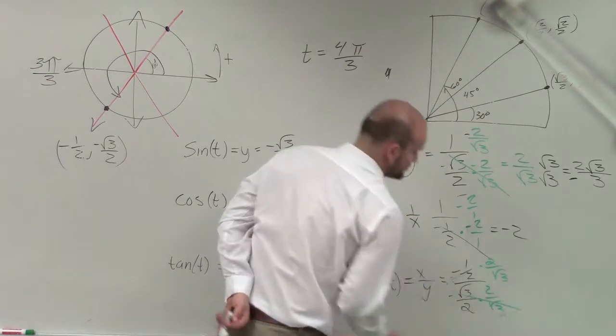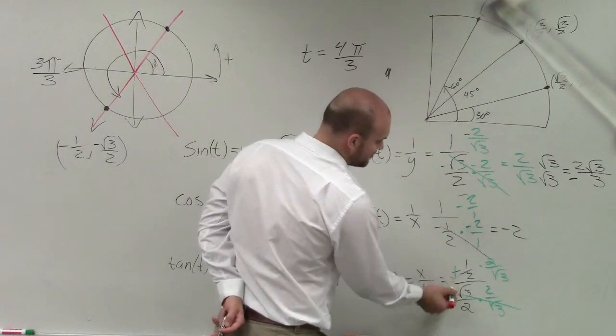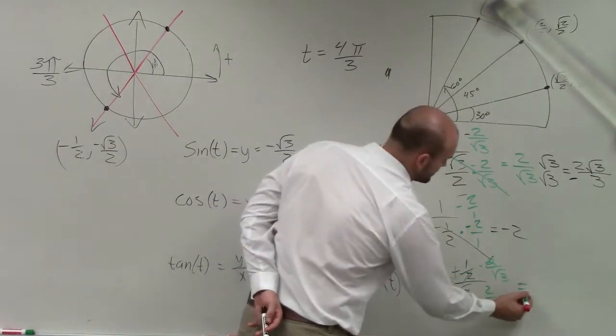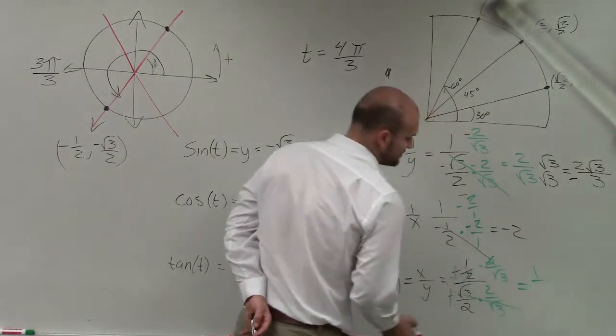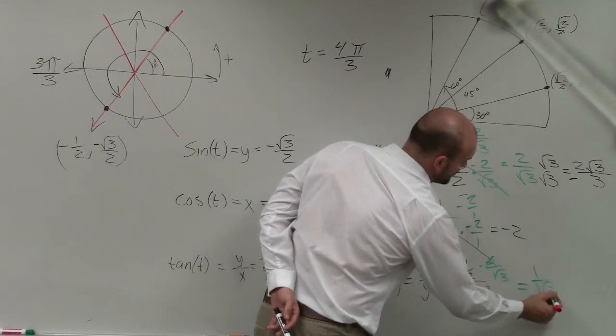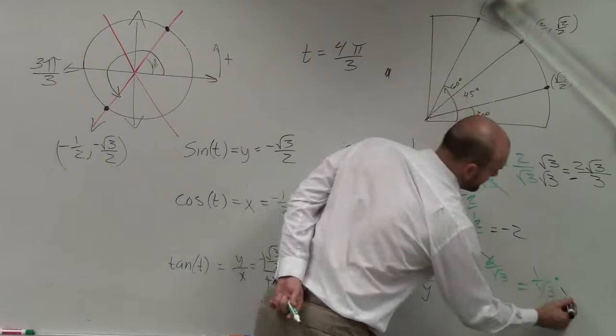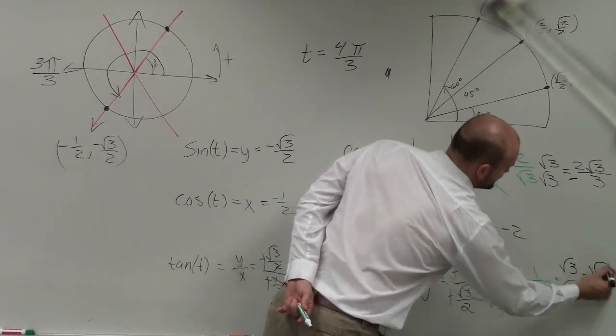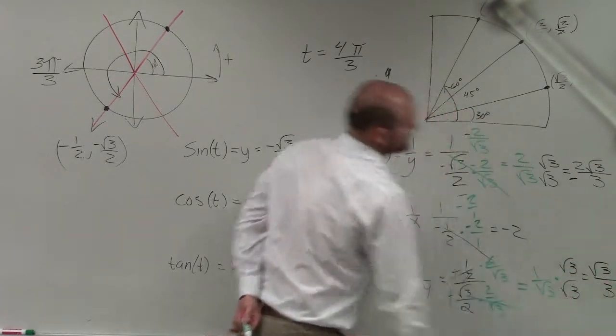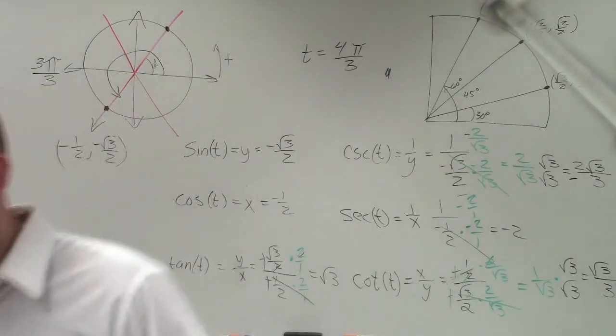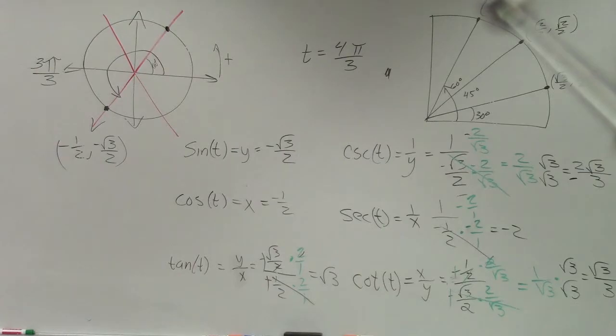If I multiply by 2 over the √3, you notice those just go to 1. My negatives go to a positive. My 2's divide out, and I just have 1 over the √3. Then I multiply again by the rational. Final answer, √3/3. And that's it. That's a lot of work.